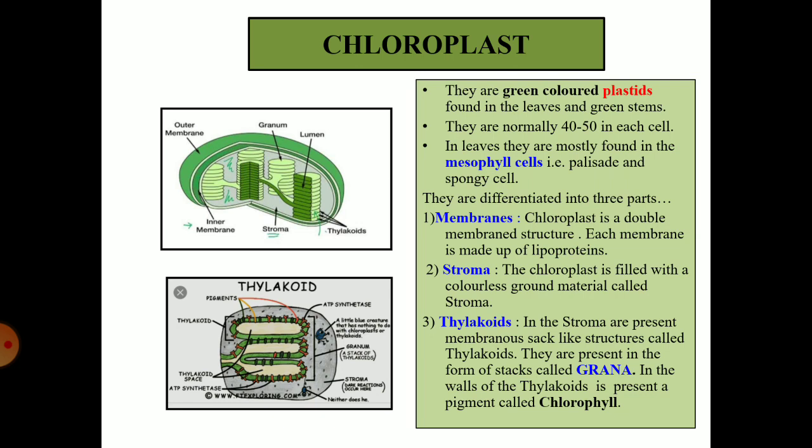Chloroplasts are differentiated into three parts. First, membranes: the chloroplast is a double membrane structure; each membrane is made up of lipoproteins, that is lipid and proteins. Between these two layers there is a space known as the periplastidial space. Second, stroma: the ground material present in the chloroplast is known as stroma. Third, thylakoids: in the stroma are present membranous stack-like structures called thylakoids, like coins put one above the other. They are present in the form of stacks called grana, and one stack is called a granum. In the walls of the thylakoid is present a pigment known as chlorophyll. The stacks, that is the grana, are interconnected by pipelines known as the interstromal lamellae.